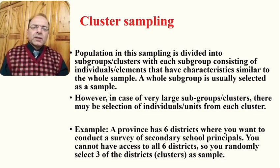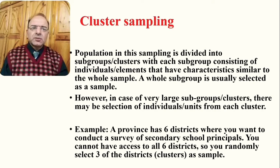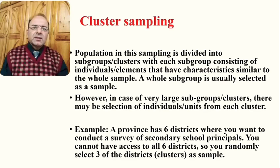An example to clarify cluster sampling: a province has six districts where a researcher wants to conduct a survey of secondary school principals related to some research question. The researcher may not be able to access all six districts, so they randomly select three districts or clusters as samples. Each cluster consists of individuals or elements that have characteristics similar to the whole population.